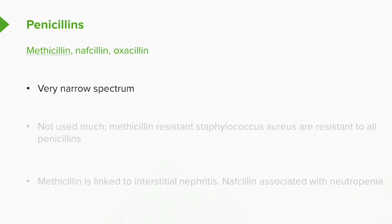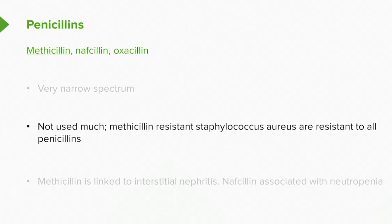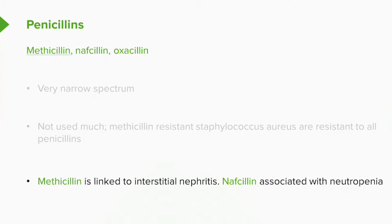Narrow-spectrum penicillins include methicillin, nafcillin, and oxacillin. They're not used much anymore. Methicillin-resistant Staphylococcus has essentially taken methicillin off the table, because MRSAs are resistant to all penicillins. Methicillin is also linked to interstitial nephritis, and nafcillin is associated with neutropenia. These agents are falling out of favor, but they still appear on susceptibility charts.